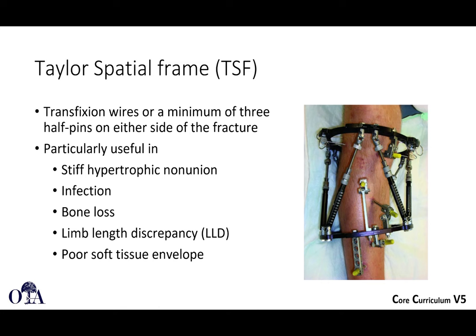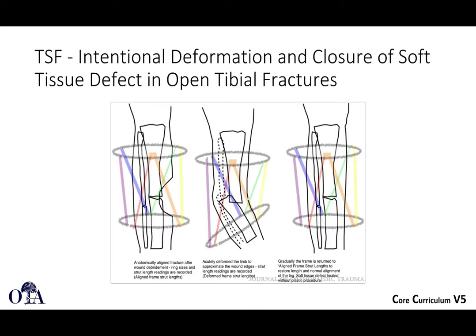You need to use transfixion wires or a minimum of three half pins on either side of the fracture, resulting in something that looks like this. These frames can be useful for stiff hypertrophic non-unions, infection, bone loss, limb length discrepancy, or for fractures that might otherwise be fixed acutely with plates and screws but have a very poor soft tissue envelope.